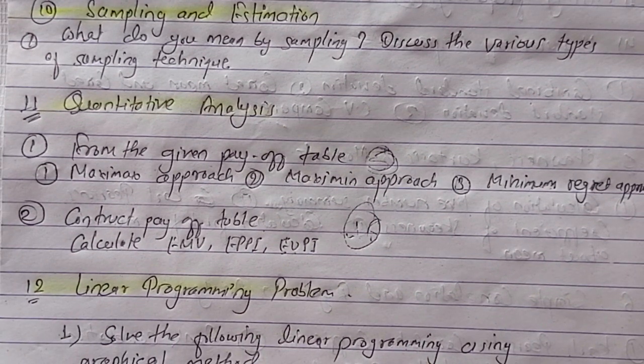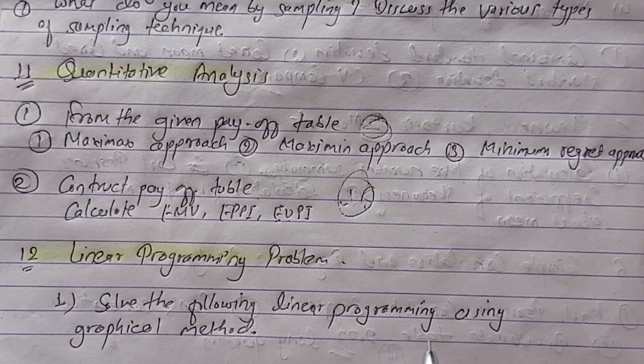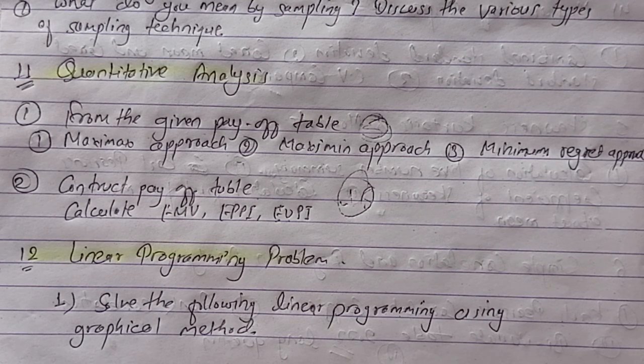Chapter 12, linear programming problem. This topic is fixed for 10 marks. Solve the following linear programming using graphical method. This question is 100% and this question will be there.